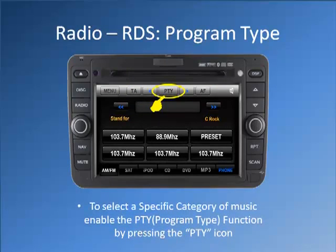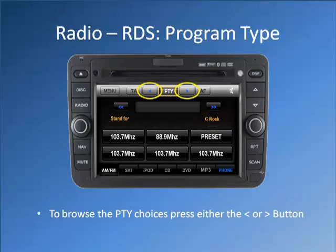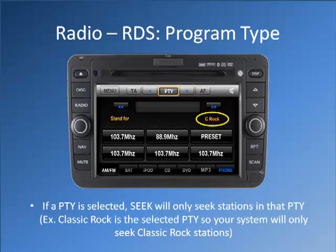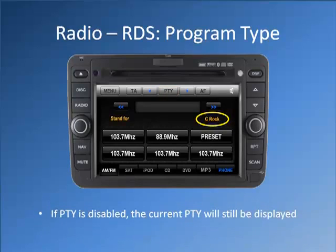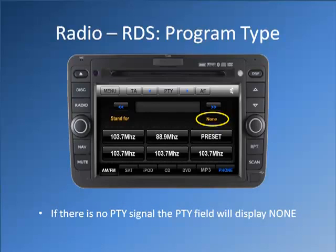To select a specific category of music, enable the program type function by pressing the PTY icon. PTY choices are displayed in the PTY field. To browse the PTY choices, press either of the arrow buttons. If a PTY is selected, SEEK will only seek stations in that PTY. For example, if Classic Rock is the selected PTY, your system will only seek Classic Rock stations. If PTY is disabled, the current PTY will still be displayed. If there is no PTY signal, the PTY field will display none.